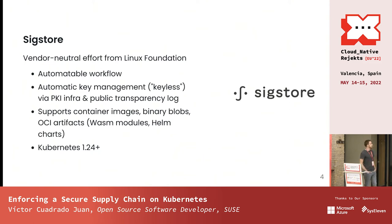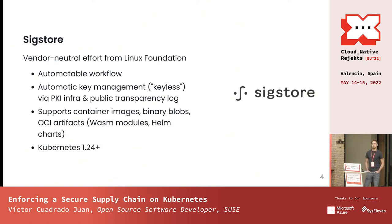Instead of that, we can shift a bit of the trust and use an automatic key management workflow. Sigstore calls it keyless. It uses basically some PKI infrastructure, and then a transparency log. Sigstore is great because it supports container images, binaries, OCI artifacts, Wasm modules, Wasm binaries — you'll understand why that's important later — and Helm charts. Kubernetes, since version 1.24, is signing everything with Sigstore, all the images, and will keep signing them onwards.